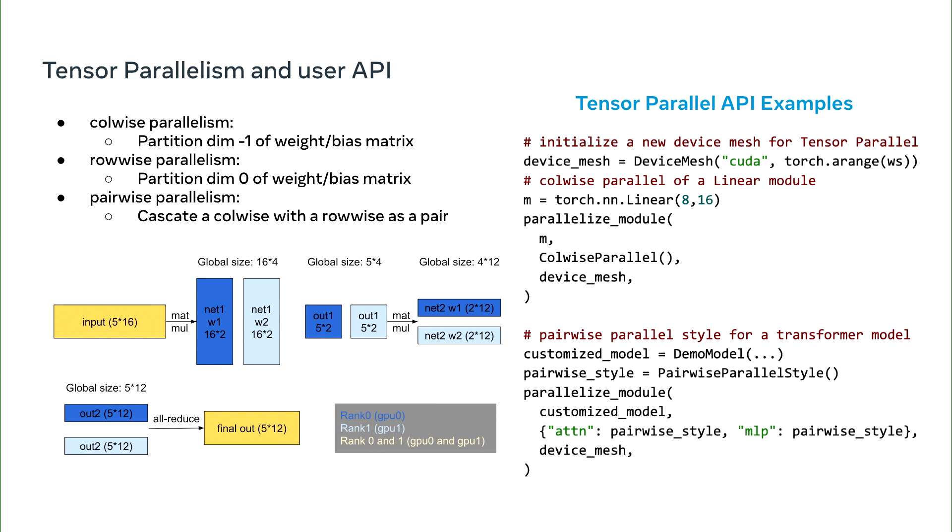The first two are pretty intuitive, as we just partition one dimension of a given tensor. The third one, pair-wise parallelism, is to combine the first two and achieve calculation efficiency.